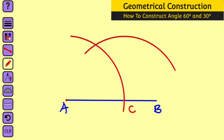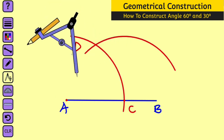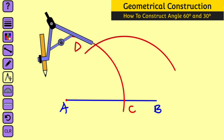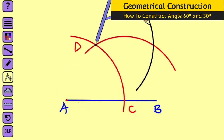Remove the compass and label the point of intersection as D. Now bring the compass again and take it to the point of intersection D. Construct an arc to cut the last arc. Remove the compass and label the point of intersection as E. Now use your ruler to connect point E and point A together, and you are done.